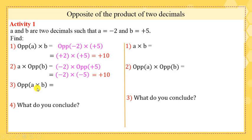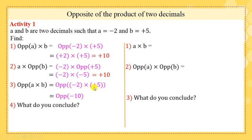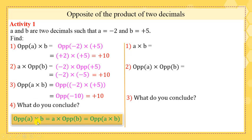Now, opposite of a × b equals opposite of a, which is negative 2, times b, which is positive 5. We find the product of negative 2 × positive 5, which is negative 10. The opposite of negative 10 is positive 10.